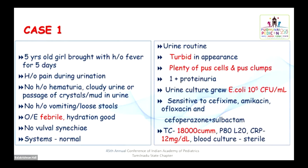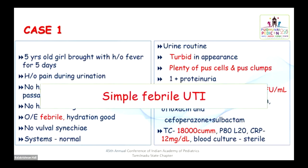Urine routine showed turbid appearance. Plenty of pus cells and pus clumps were there. She had 1 plus proteinuria. Urine culture was growing E. coli 10 to the power of 5, sensitive to routine antibiotics — cefixime, ofloxacin and so on. The total count was elevated with polymorphonuclear predominance. CRP was elevated. Blood culture was sterile. So this is a simple febrile urinary tract infection.